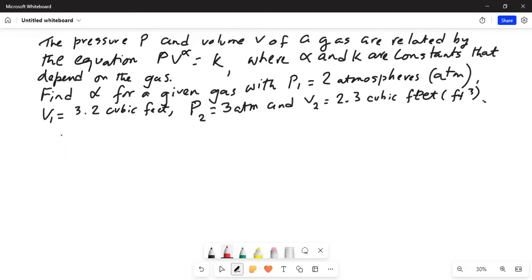Solution. We know p times v exponent alpha equals k. Substitute p1 equals 2 and v1 equals 3.2. So we get 2 times 3.2 exponent alpha is equal to k.